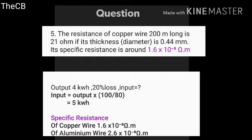The specific resistance of aluminum wire is 2.6 into 10 to the power minus 8 ohm meter. You have to remember these values no matter what problem is given to you.